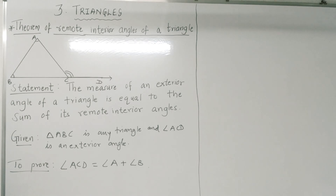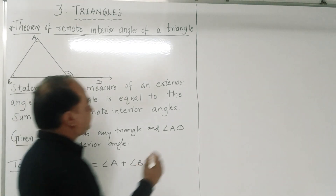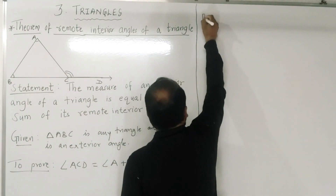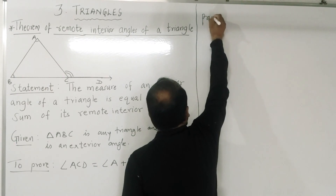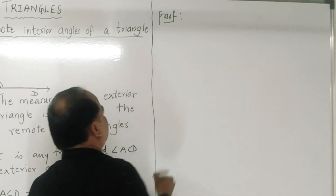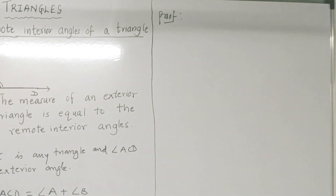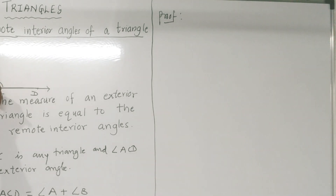Now for the proof of this theorem — in the last chapter we studied the theorem that the sum of the measures of angles of a triangle is 180 degrees. We are going to make use of that theorem here.